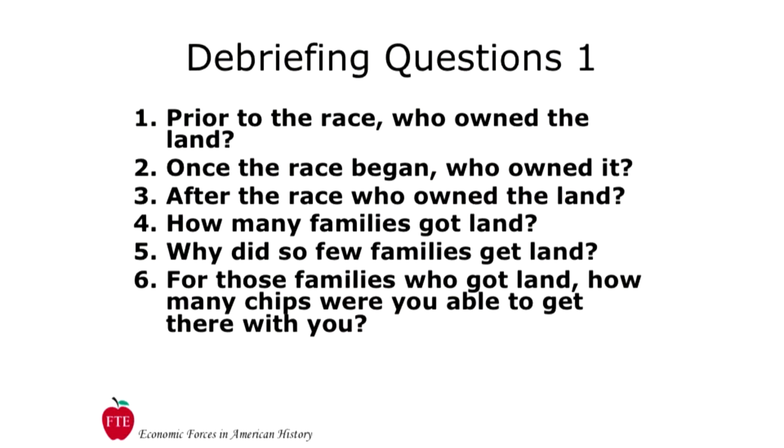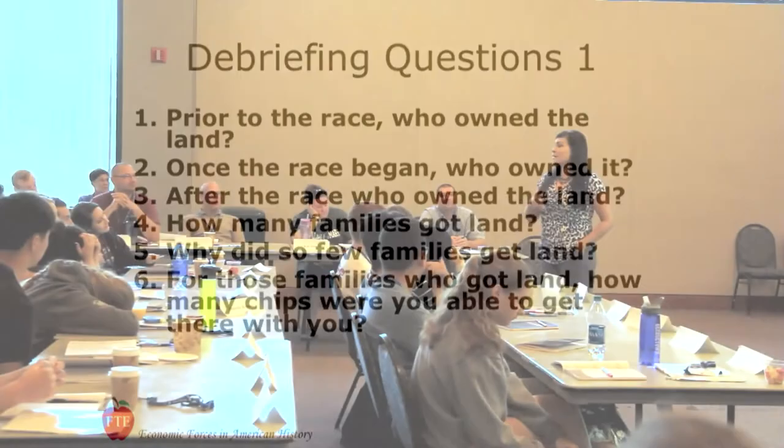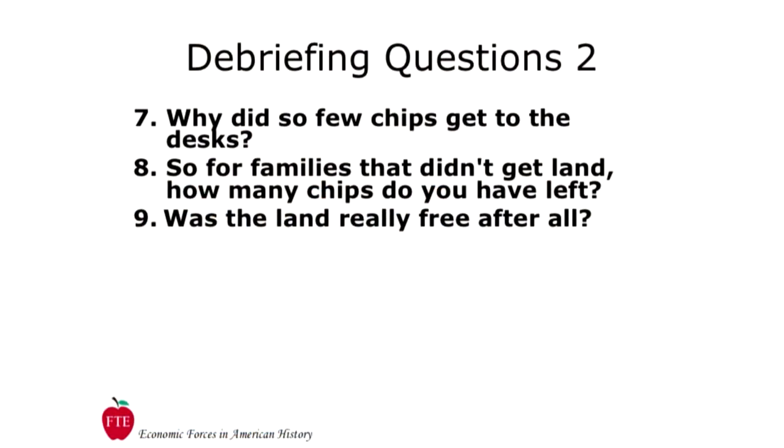Emphasize that just because the land was given away doesn't mean it was free. Help students identify the real costs families paid for land — especially the costs paid by families that raced, lost chips, and got no land. Everybody bore some costs. Imagine the real families racing for land: even though it was free, they had to bear costs to get there — preparing rigs, horses, and equipment required opportunity costs, maybe trading something to get a wagon. So was the land really free after all? This allocation created incentives that resulted in waste and inefficient use of resources as families raced to capture the scarce land.